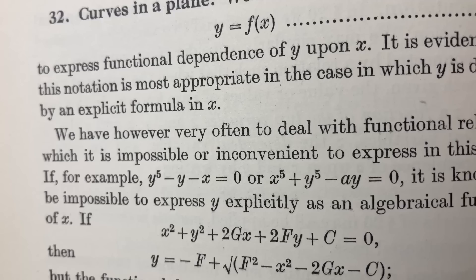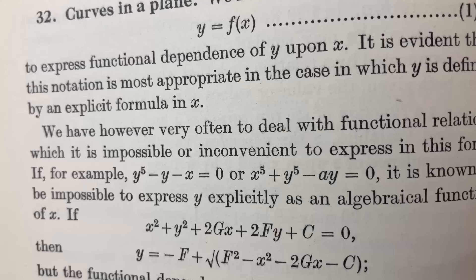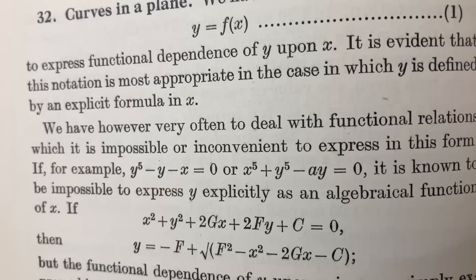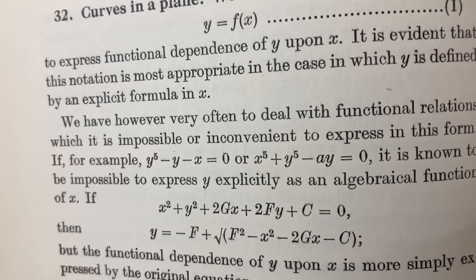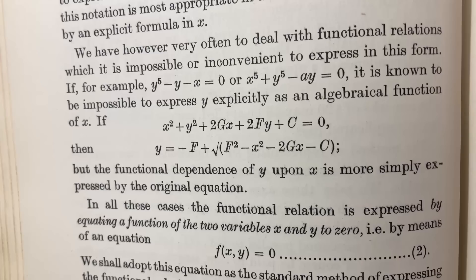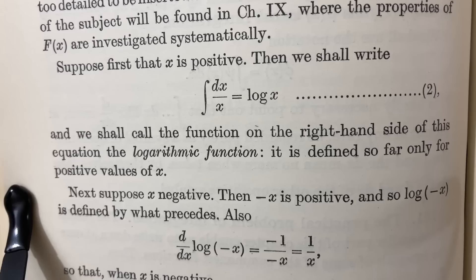If, for example, we have y to the fifth minus y minus x equals zero or x to the fifth plus y to the fifth minus ay equals zero, it is known to be impossible to express y explicitly as an algebraical function of x. Then here he goes on and discusses some more mathematics.